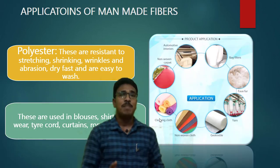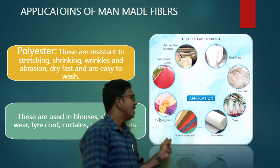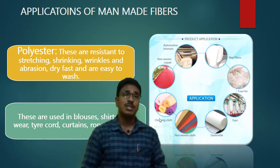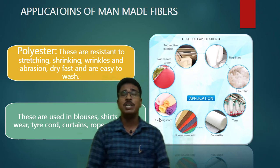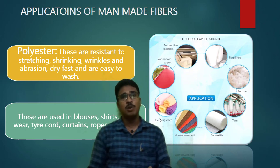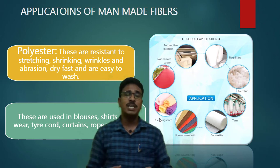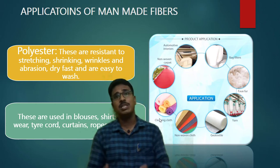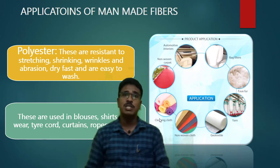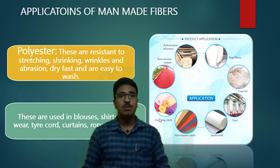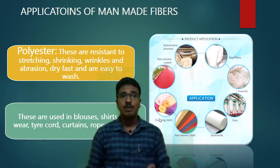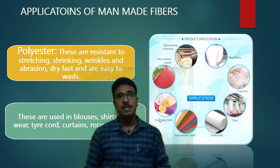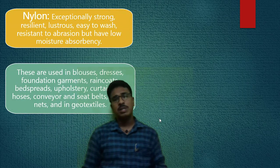Polyester is used in many applications, mainly in apparel, generally in blends with natural fibers rather than alone. Common blends include polyester-cotton, polyester-wool, and polyester-viscose. Applications include blouses, shirts, knitwear, tie-cord fabrics, curtains, ropes, and nets.